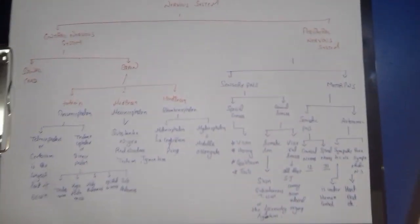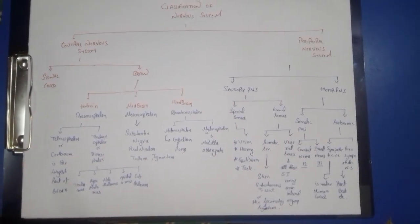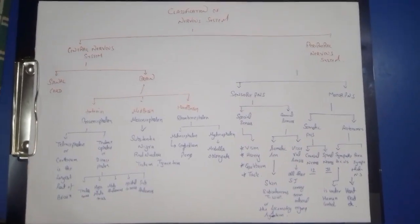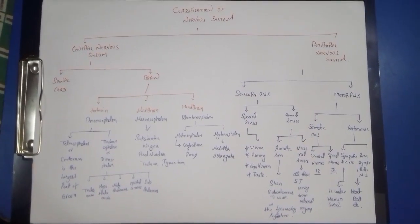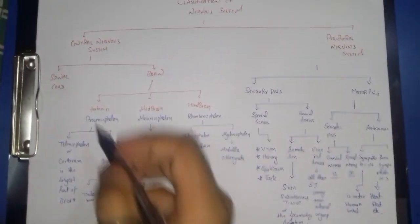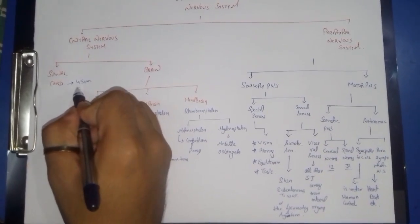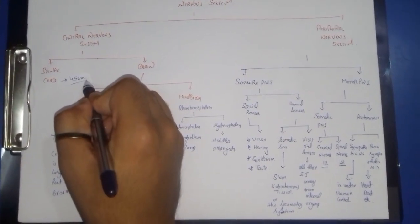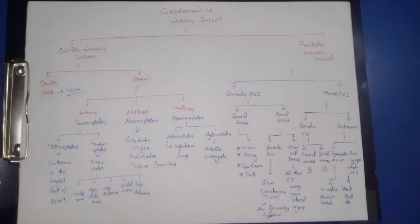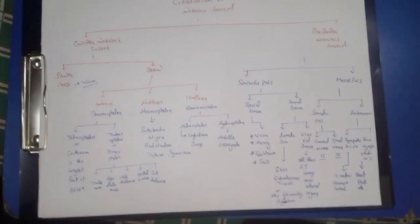So guys, this was the whole chart classification of the nervous system, which involves the central nervous system and the peripheral nervous system. We will study in further detail in further videos. One thing must be noted: the spinal cord is a long — about 45 centimeter long — neural cord which is present in between the vertebras. Friends, this was the classification of the nervous system. Hope you understand all the information. Thank you so much.